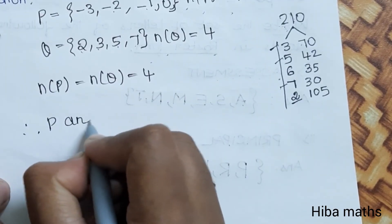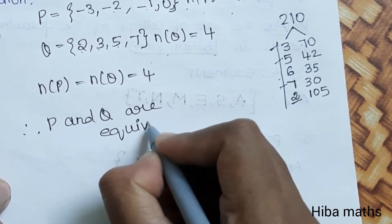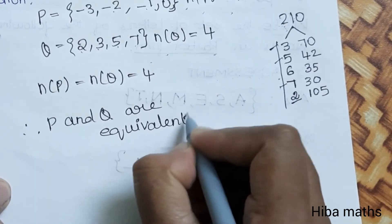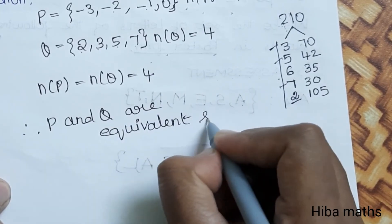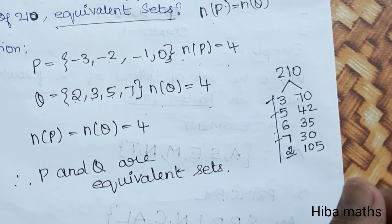Therefore, P and Q are equivalent sets. This is how you can write the answer. Thank you so much for watching.